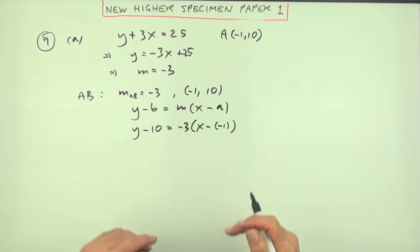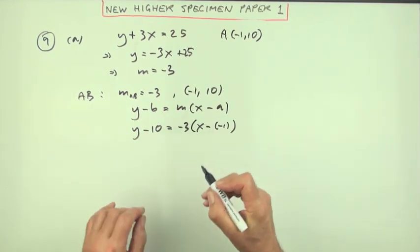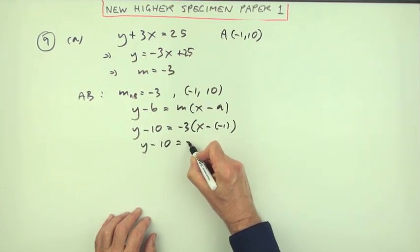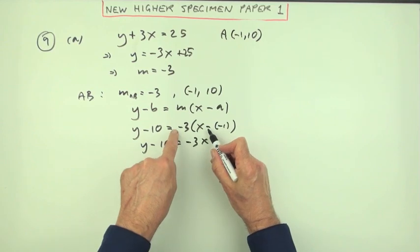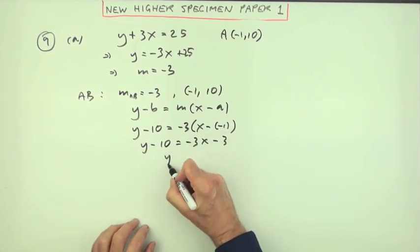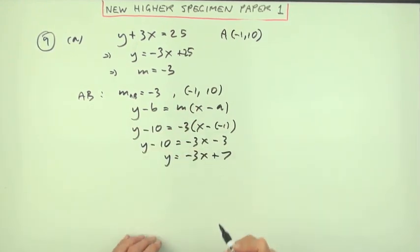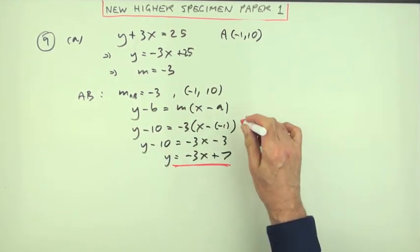You probably know you can just leave it like that and you'll get your mark. If I tidy that up, I've got y minus 10 equals -3x minus 3, so y is -3x plus 7.